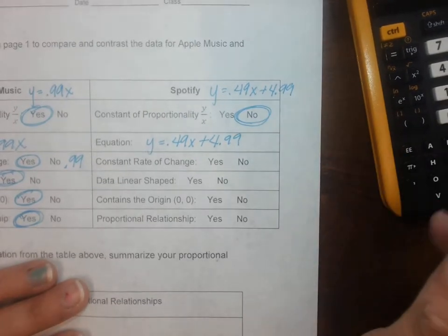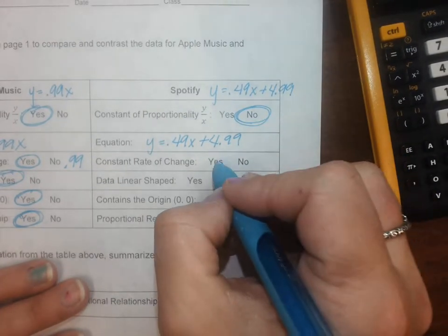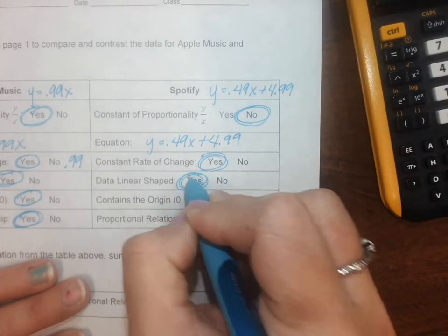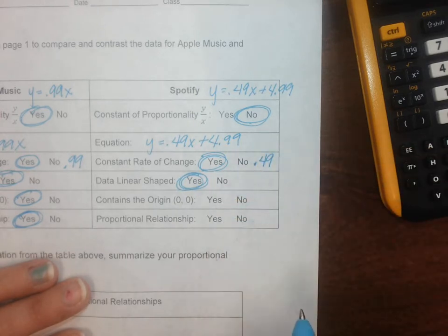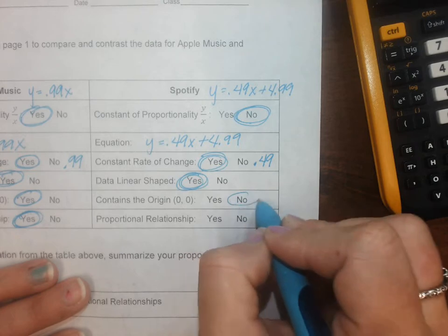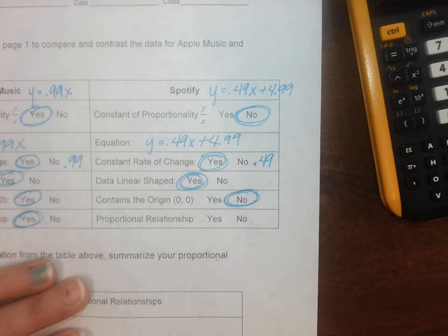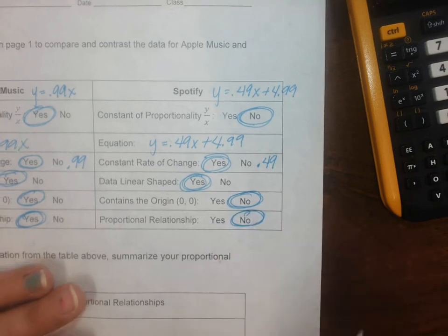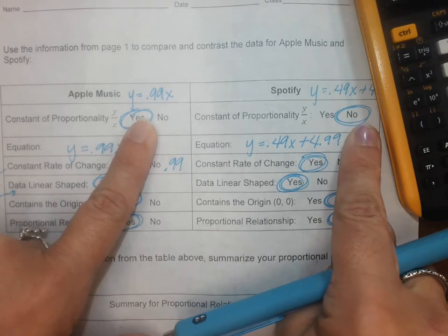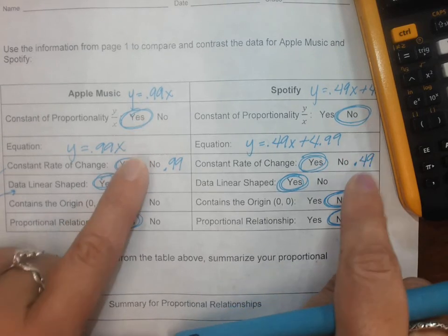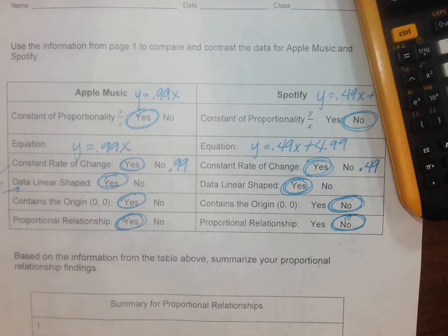Here's my equation: y equals 0.49x plus 4.99. Is there a constant rate of change? Yes, that's what makes it linear. My constant rate of change is 49 cents per song. It's linear. It does not contain the origin because remember it started at $4.99. Therefore it is not proportional.